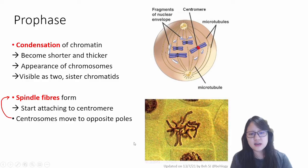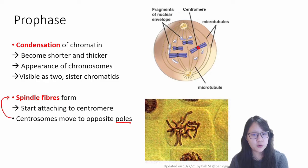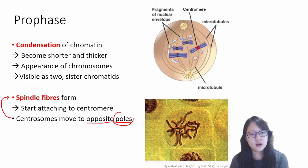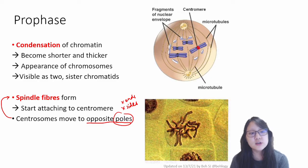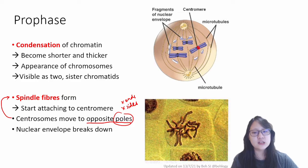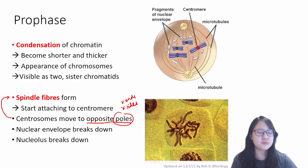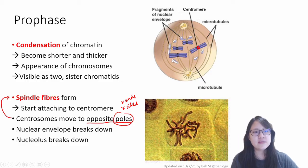Just a note as well: when we say opposite poles, 'poles' is specific terminology here. You cannot use the word 'ends' or 'sides' of the cell — you must use the word 'poles' when it comes to mitosis. So centrosomes are moving to opposite poles. What also happens is that the nuclear envelope breaks down and the nucleolus breaks down, so basically the entire nucleus disassembles and the whole cell just focuses on cell division.